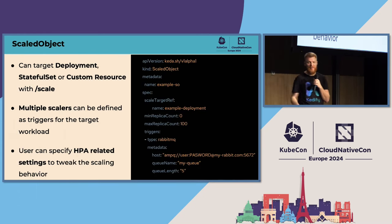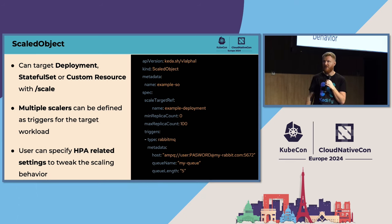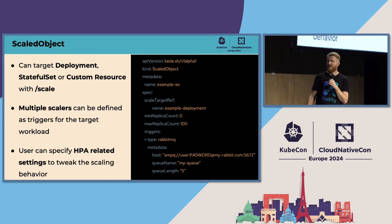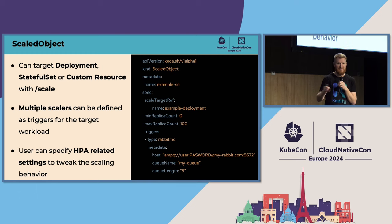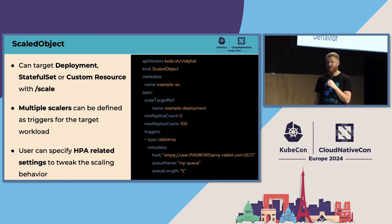There are two main resources. The first is ScaledObject, which lets you auto-scale deployments, stateful sets, or any custom resource that exposes scaled sub-resources. The ScaledObject has three main sections: the scaled target (referencing the application to scale), a middle section with configuration options like minimum and maximum, and a trigger section where you specify connectors to external services. There can be multiple triggers pointing to different RabbitMQ queues, Prometheus, or whatever.